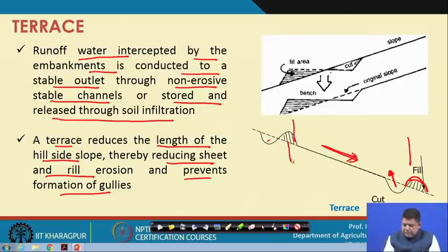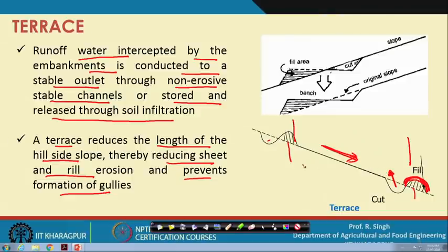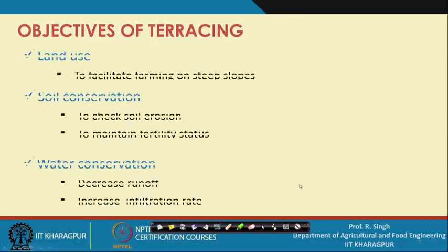By constructing a series of embankments we reduce slope length and prevent overland flow, so sheet erosion followed by rill erosion does not occur, and formation of gullies is also prevented. Another form involves cutting and filling to create horizontal platforms — benches — which are referred to as bench terraces. All these details will be covered in the next lectures.